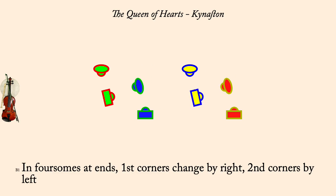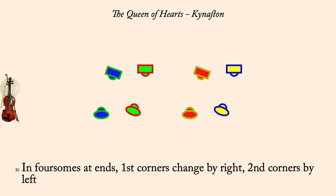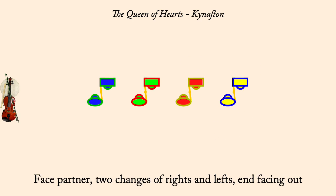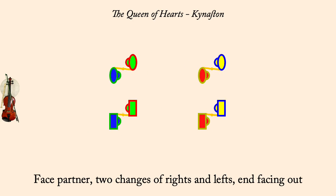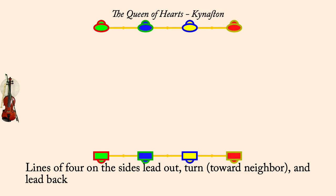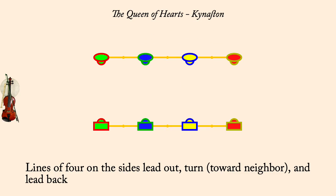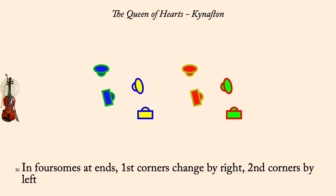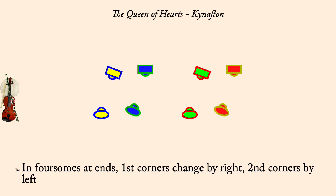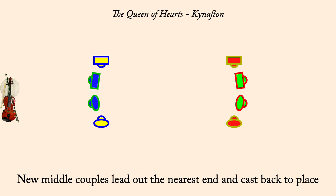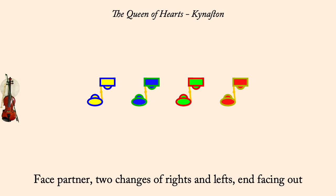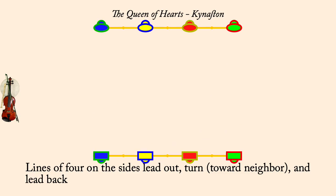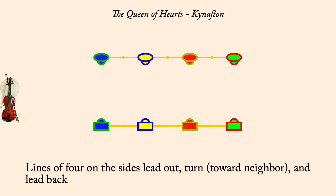First corners change by right, second by left. New middles lead out nearest end and cast back. Two changes of rights and lefts, end facing out. Lines of four lead out, turn, lead back. Ones cast to bottom as others set and lead up. First corners change by right, second by left. New middles lead out nearest end and cast back. Two changes of rights and lefts, end facing out. Lines of four lead out, turn, lead back. New middles lead out nearest end and cast back.